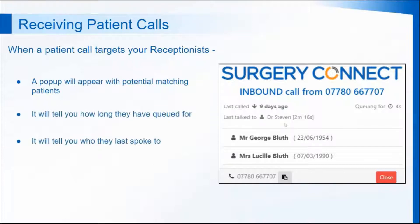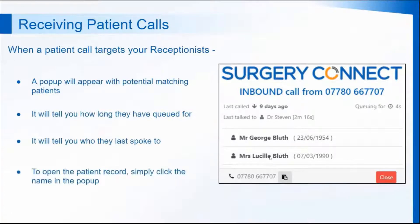When you answer the call, it could either be George or Lucille, as both of these patients have this contact number on their clinical record. So when you answer the call, you'll need to work out which patient we need to speak about. You then have their date of birth so that you can do a DPA check. When you're happy, just click on the patient name within the pop-up and that will take you straight into the clinical database, loading up that patient's details straight away for you.